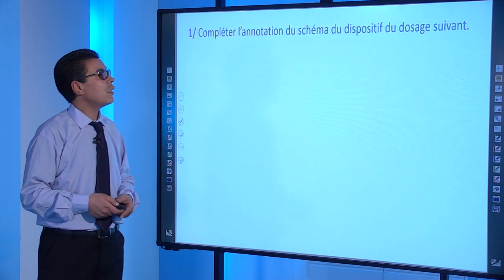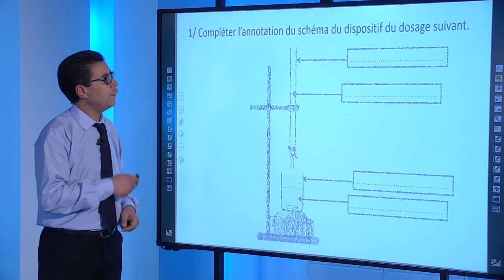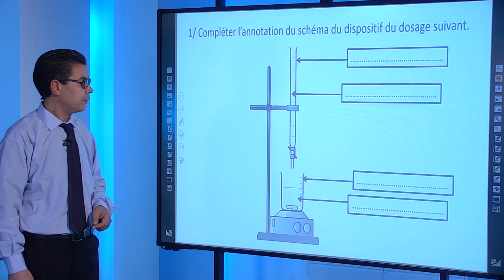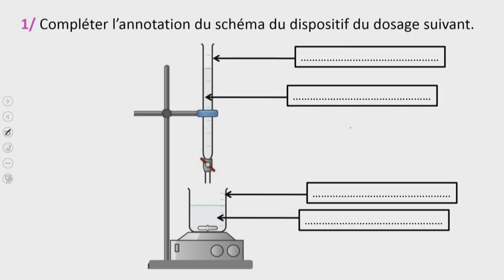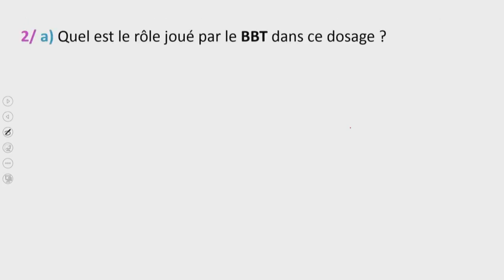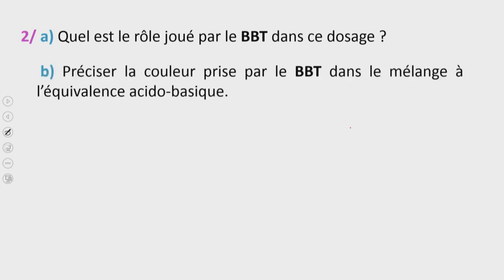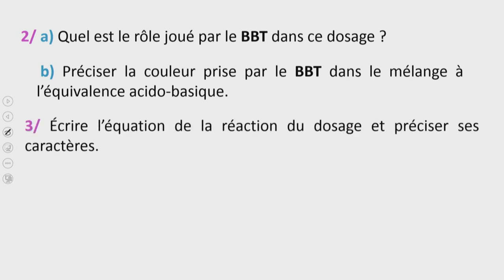Première question : compléter l'annotation du schéma du dispositif. Deuxième question, petit a : quel est le rôle joué par le BBT dans ce dosage ? Petit b : préciser la couleur prise par le BBT dans le mélange à l'équivalence acido-basique. Troisième question : écrire l'équation de la réaction du dosage et préciser ses caractères.